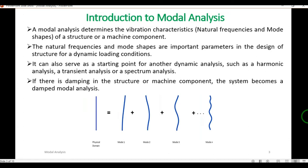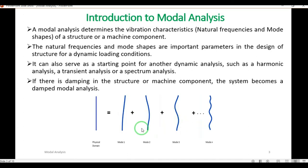In most dynamic analyses we omit damping. But if there is damping in the structure or machine component, the system becomes a damped modal analysis, which makes finding these characteristics very complex. So generally we omit damping from structures. The figure shown here indicates the physical domain — one column — and after reaching the natural frequencies, the shape of the structure changes. These are mode shapes 1, 2, and 3.